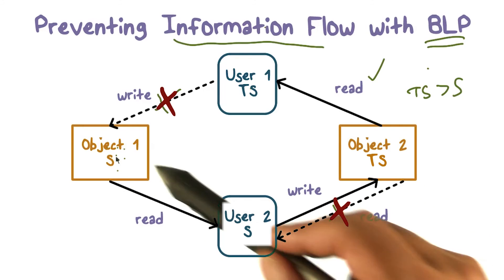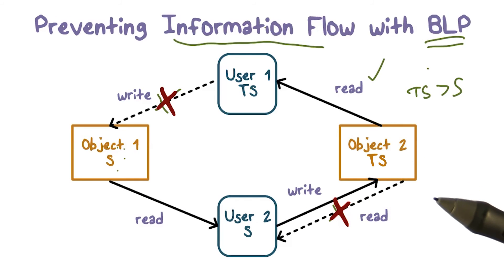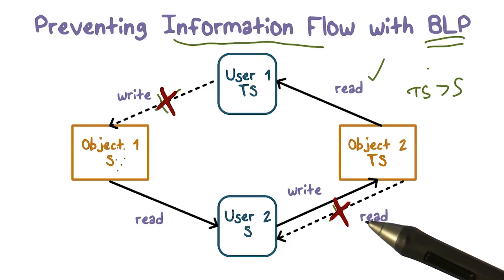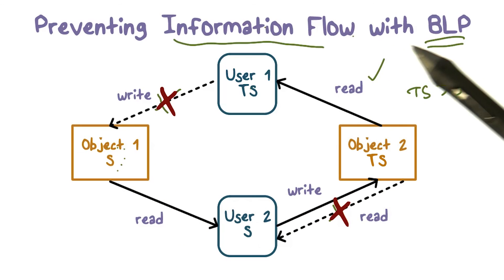So in this direction information flow doesn't make more sensitive information available to a user who is cleared at a lower level. The system would not allow information that is read from this object to be written into an object that is at a lower level. That's a guarantee that comes with BLP and the MAC model that we didn't have with DAC before.